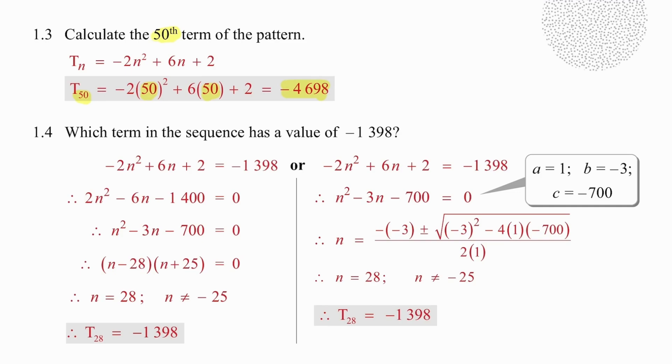The reverse logic to that would be when we are given the value of the term, so in this case, in 1.4, we are given the value to be minus 1,398, and now we have to work out the possible values of n. So we are going to equate the formula with the value of the term. We're going to put all of that onto the same side of the equation, so that the equation equals 0, in other words, standard form, and put that equation into its simplest form.